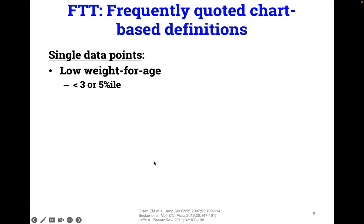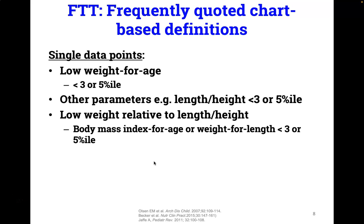Chart-based definitions using single data points are often used in the definition of failure to thrive. Low weight for age — particularly less than the third percentile — is the most commonly used definition to remember, given that that is a commonly used percentile line on the CDC and other growth curves. However, it is really challenging to interpret in isolation, and the definition is rather arbitrary. Other parameters are also considered, such as low length and height, which would be referred to as short stature. When a patient's weight is compared to height, either as weight relative to length or as body mass index, these are very likely better measures of nutritional status as a single data point.